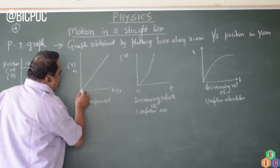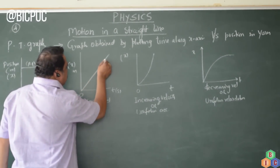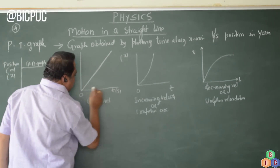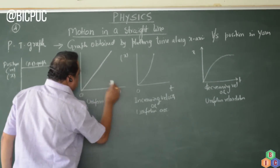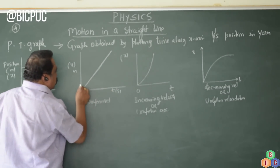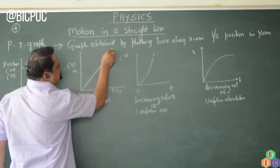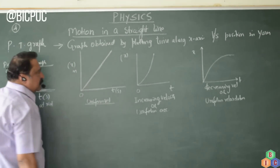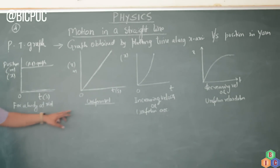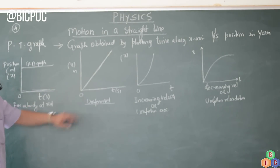Now if a body moves with uniform velocity, the time is also increasing and the position is also increasing, and this is a linear graph — a straight line graph. So this graph represents the PT graph of a particle moving with uniform velocity.